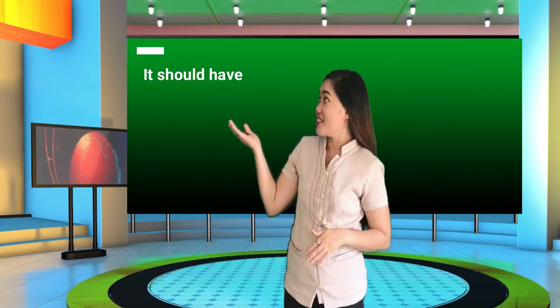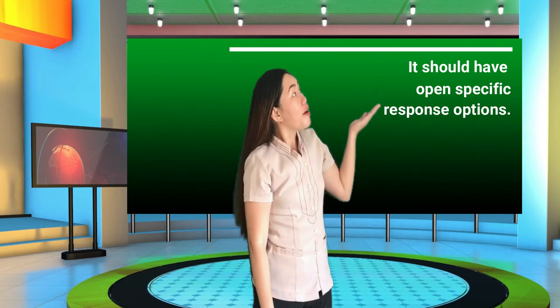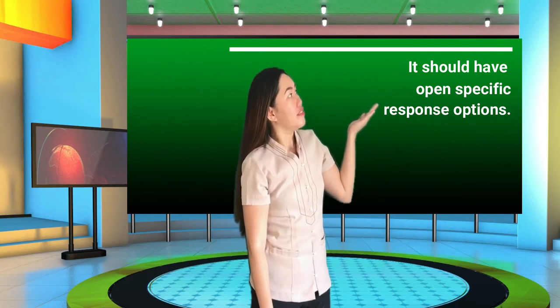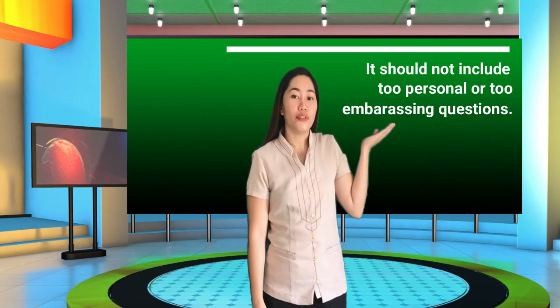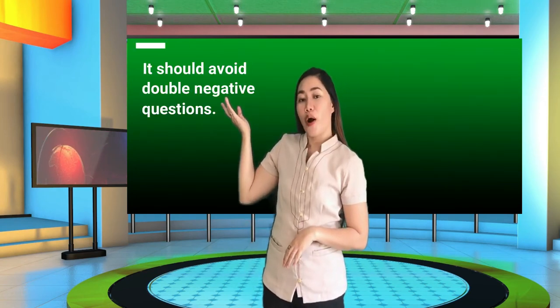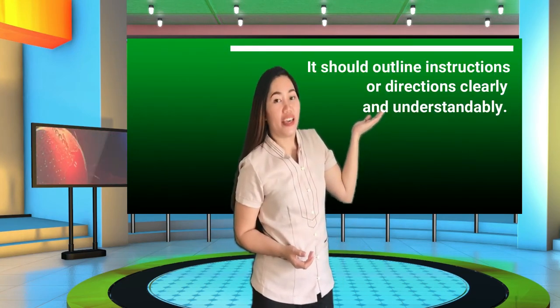Let us review the last six tips. Number six: have a clear question structure. Number seven: have open, specific response options. Number eight: do not have any bias. Number nine: do not include too personal or embarrassing questions. Number ten: avoid double negative questions. And finally, number eleven: outline instructions clearly and understandably.